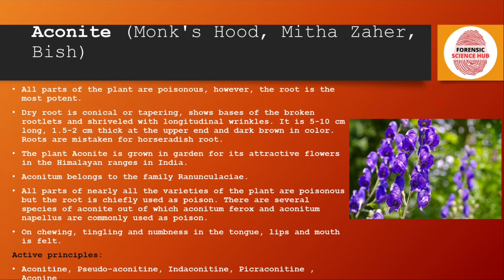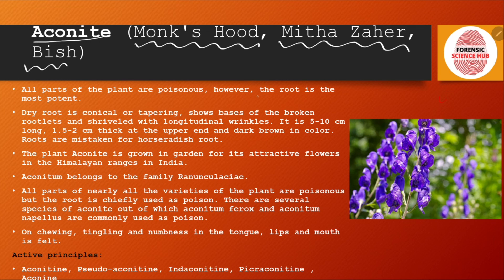Aconite is also known as Monk's Hood, Mitha Zeher, or Bish — these are common names used for this plant. All parts of the plant are poisonous; however, the root is the most potent part.